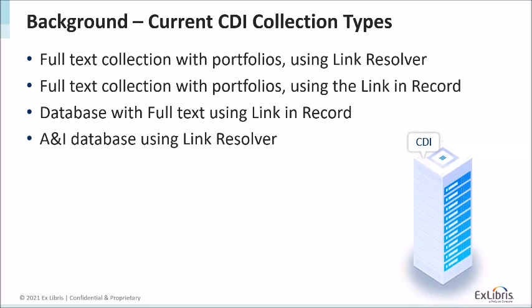The third collection type is a database with full text, where the provider sells access to full text but does not have a title list. This might be because they don't have one, or because the content is non-standard — for example, mixed content types or an institutional repository. In this case, we have CDI records and the provider sells full text, so rights work at the collection level and linking uses the linking record.